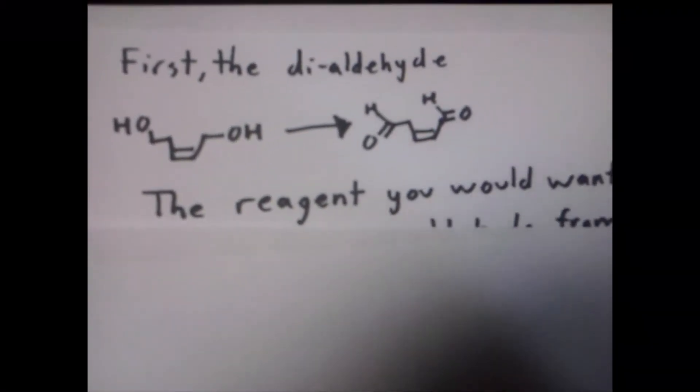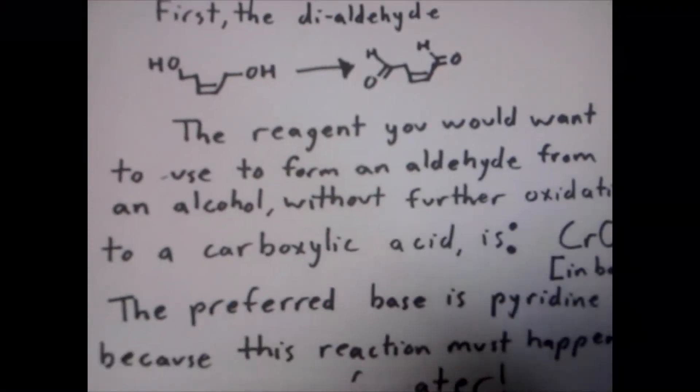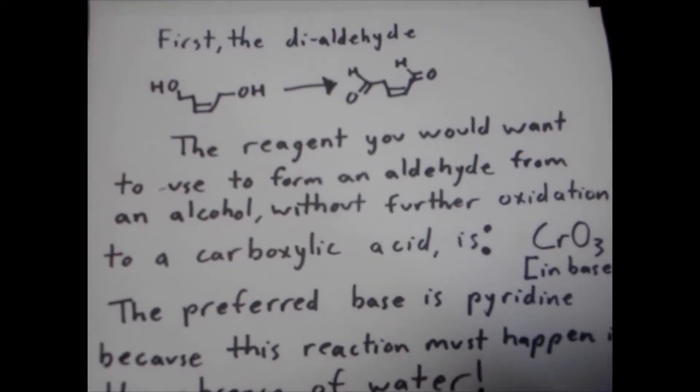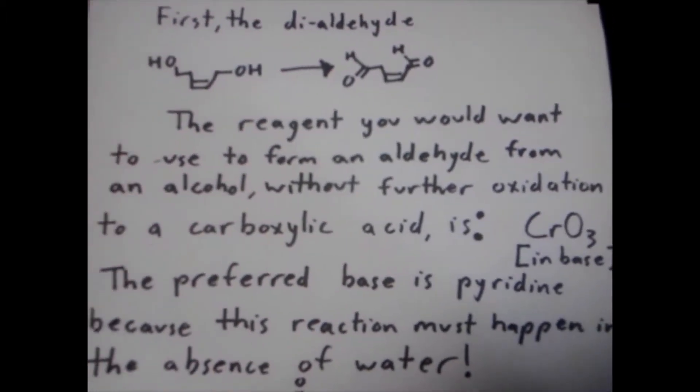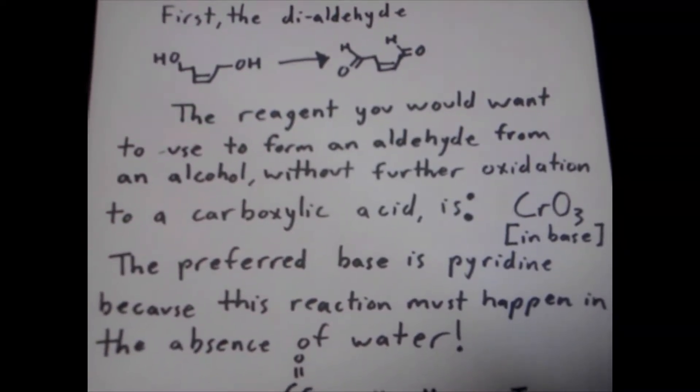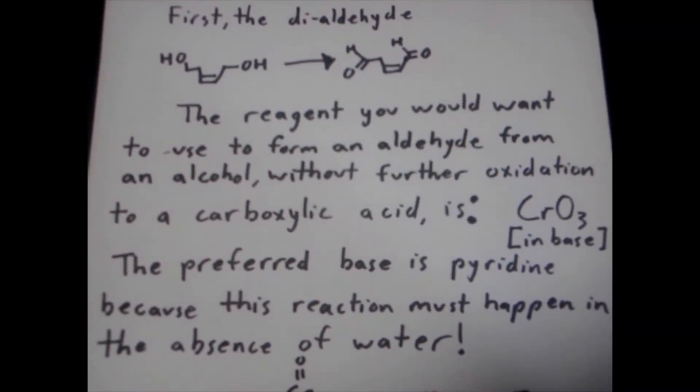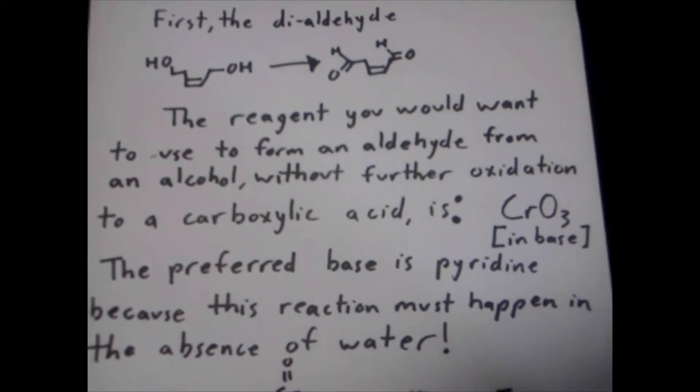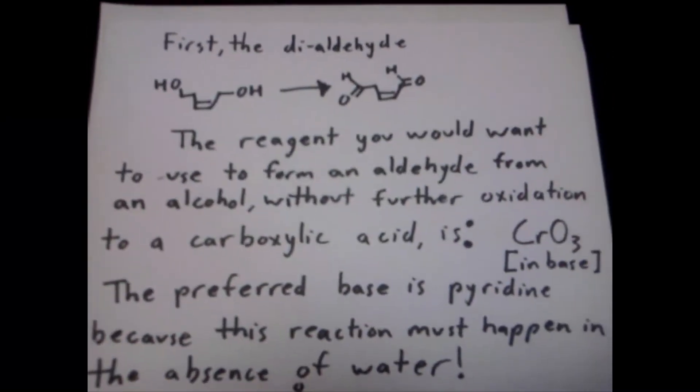First, the dialdehyde part of the reaction. The reagent you would want to use to form an aldehyde from an alcohol without further oxidation to a carboxylic acid is CrO3 in base. The preferred base is pyridine because the reaction must happen in the absence of water.